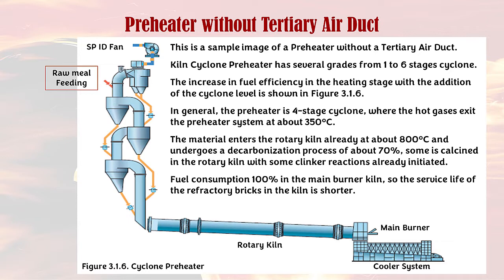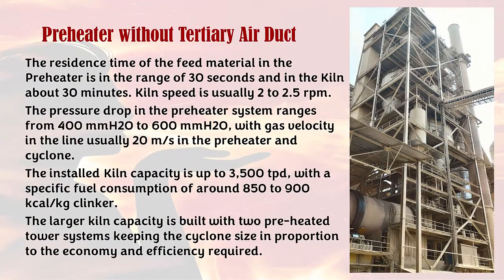Some material is calcined in the rotary kiln with some clinker reactions already initiated. Fuel consumption is 100 percent in the main burner kiln, so the service life of the refractory bricks in the kiln is shorter. The residence time of the feed material in the preheater is in the range of 30 seconds and in the kiln about 30 minutes. Kiln speed is usually 2 to 2.5 RPM. The pressure drop in the preheater system ranges from 400 to 600 millimeters H2O, with gas velocity in the line usually 20 meters per second in the preheater and cyclone.